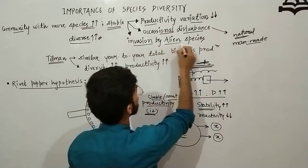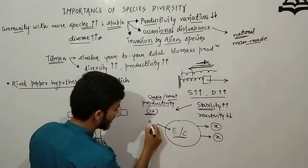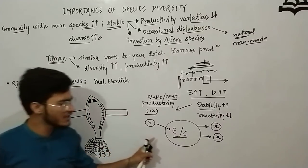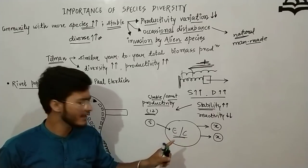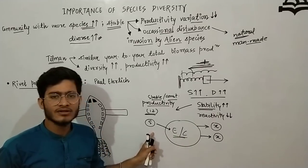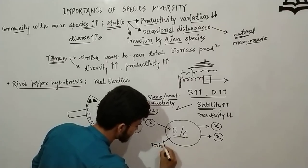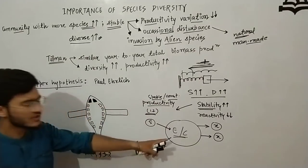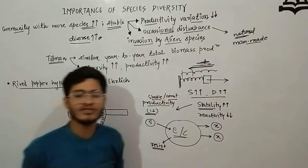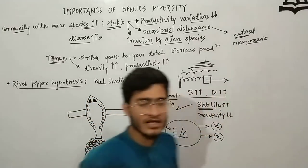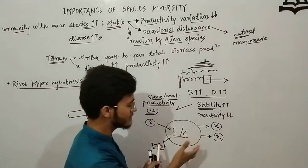The third parameter is resistance to invasion by alien species. If some foreign species come into this ecosystem, a highly stable community will resist and stop that invasion. So these are the three important parameters of calling an ecosystem stable: variation in productivity, resistance to disturbances, and resistance to alien species invasion.